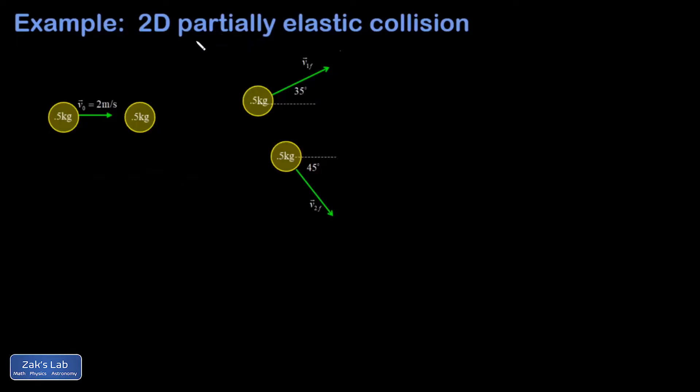Let's analyze a partially elastic two-dimensional collision. So I have a couple billiard balls here. One of them is moving, one of them is the target. They crash into each other.